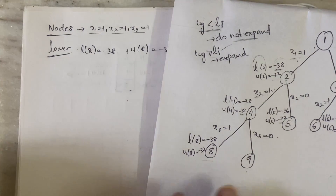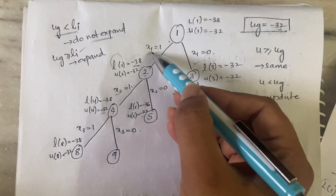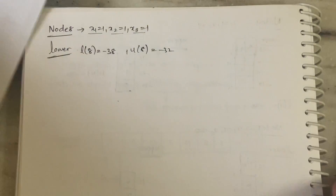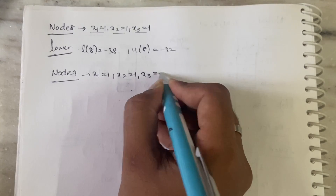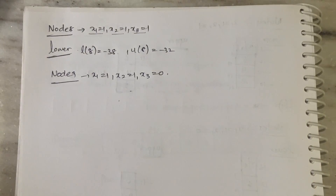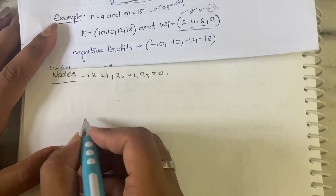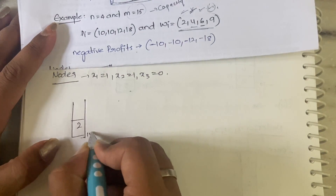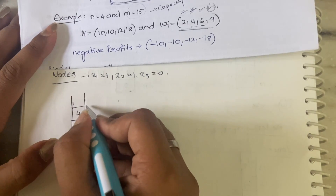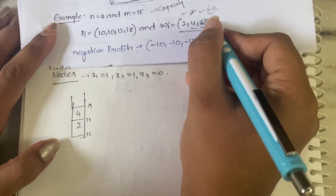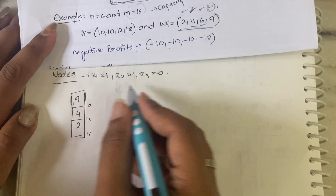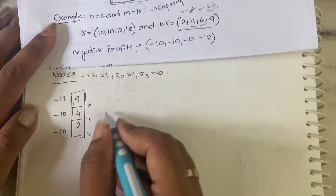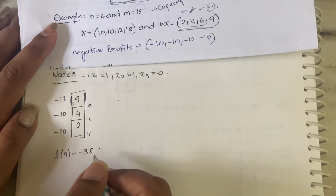Now let's do node 9. For node 9 the condition is x1=1, x2=1, and x3=0. That means you are taking x1 and x2 but leaving x3. So x1 gives 2, remaining capacity is 13; you take x2 giving 4, remaining capacity is 9; and x4 is exactly 9 so you fit it in. The profits associated are minus 10, minus 10, and minus 18, so lower bound of node 9 will be minus 38.